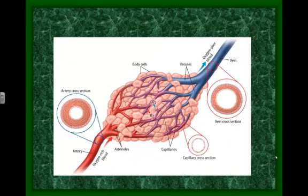In diagrams, oxygen-poor blood is shown in blue, but it is not actually blue. We'll talk more about that when we get into blood. They use blue in diagrams to illustrate the difference, but it's misleading — people think it's blue because you can look through your skin and see blue, but that's because you're also looking through the walls of the veins. They're all red; it's just a different kind of red. The diagram shows how venules gradually get larger into a vein and how tiny capillaries surround the cells for diffusion.